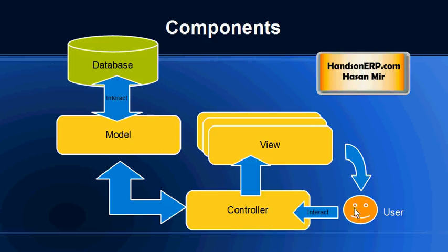Let's say the user is seeing something on the screen — a presentation view from the software — and the user presses some button. The controller is going to take over the communication and translate that button into some kind of an action. Let's say this button is about querying some data from the database, so the controller is going to pass that information to the model. The model will do the query in the database, the database will return the results back to the model, and the model is going to return the results back to the controller. Now the controller will decide which of the views to use to display the information back to the user.